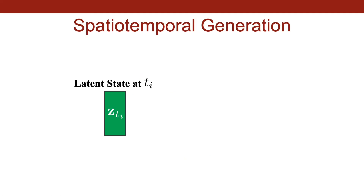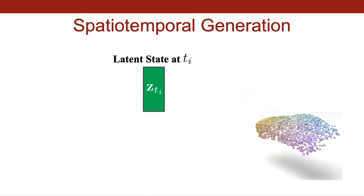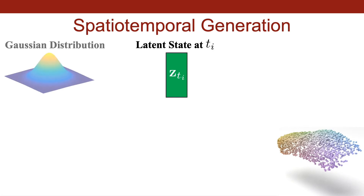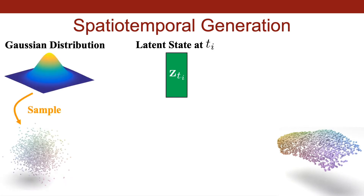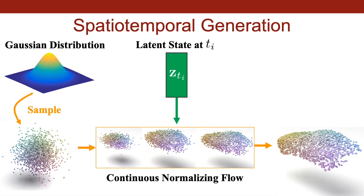Given the latent representation of the object from the ODE, we want to continuously sample the underlying partial object surface. To do this, CASPER learns to map 3D Gaussian noise onto the object surface. This continuous normalizing flow supports arbitrary spatial density, and captures the natural point distribution observed in the training data.